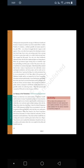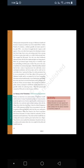Swaraj in the Plantations — Workers too had their own understanding of Mahatma Gandhi and the notion of Swaraj. For plantation workers in Assam, freedom meant the right to move freely in and out of the confined space in which they were enclosed, and it meant retaining a link with the village from which they had come. Under the Inland Immigration Act of 1859, plantation workers were not permitted to leave the tea gardens without permission. When they heard of the non-cooperation movement, thousands of workers defied the authorities, left the plantations, and headed home, believing that Gandhi Raj was coming. They, however, never reached their destination — stranded by a railway and steamer strike, they were caught by the police and brutally beaten up.